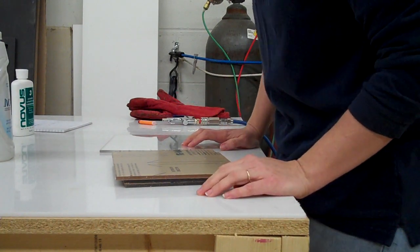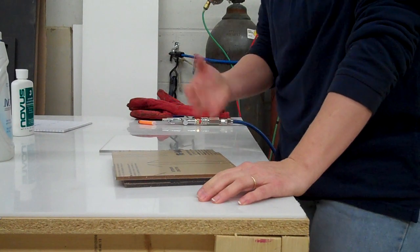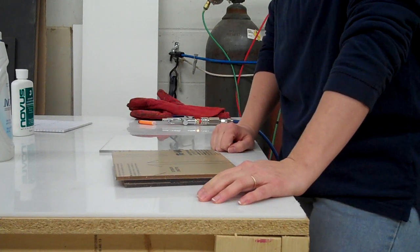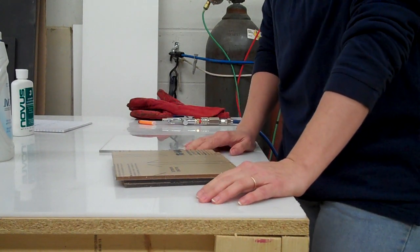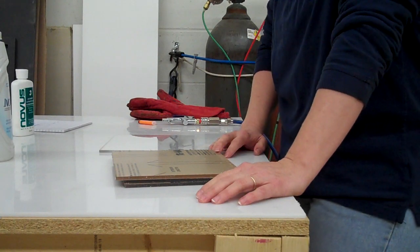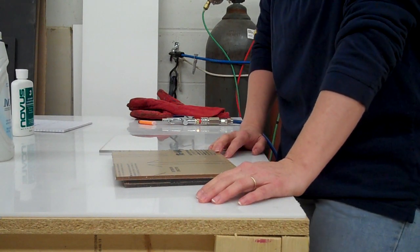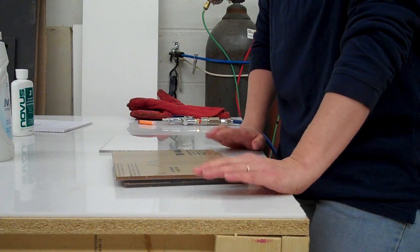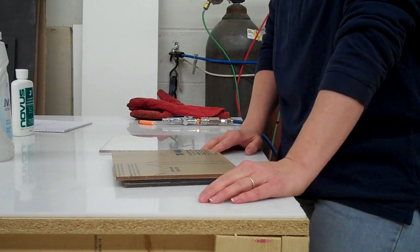We're going to talk about flame polishing acrylic or plexiglass. First thing you need to make sure you have acrylic or plexiglass and not polycarbonate. Polycarbonate you cannot flame polish. You can take a buffing wheel to it and give it a glass-like appearance that way.